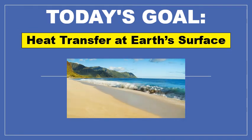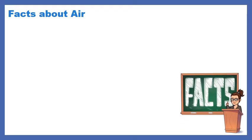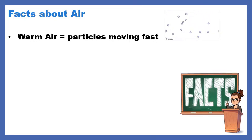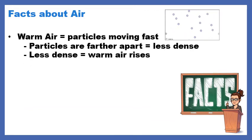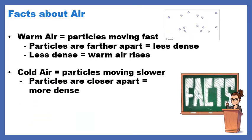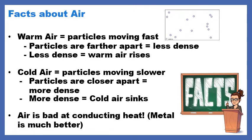Today's goal is to learn about heat transfer at Earth's surface — and good news, we'll be talking about the beach. First key fact: in warm air, particles are moving fast. Since air is a gas with the fastest particle speed, the particles are farther apart, so warm air is less dense and rises. Second fact: in cold air, particles move slightly slower, so they're closer together, more dense, and cold air sinks. Last fact before the lesson: air is bad at conducting heat — substances like metal are much better.